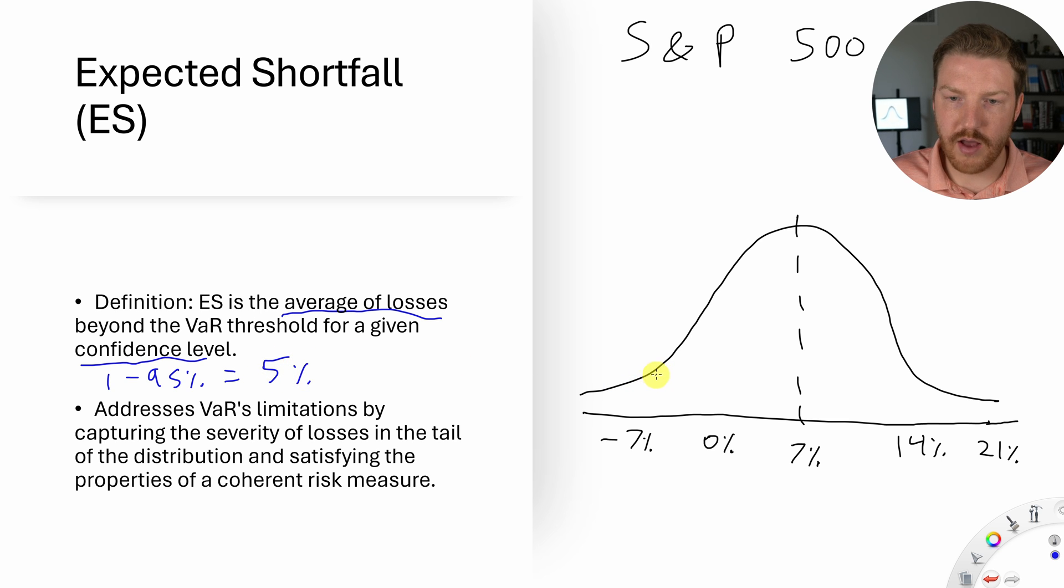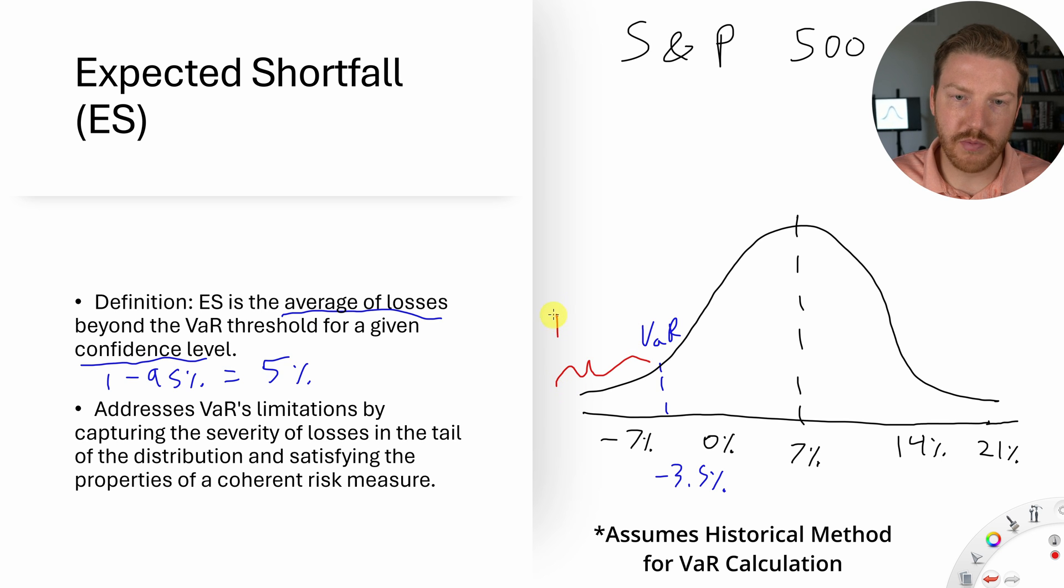And again, we're going to look at that 95th percentile confidence level, which puts us out into the 5th percentile tail. And if we just drew that right here, let's stick with the same numbers as last time. Here's our VaR, which is basically negative 3.5%. Then the expected shortfall would actually be the average of everything here. So if we took an average of all these observations, that would be our expected shortfall. I'm going to make up a number and let's just say the expected shortfall is equal to like negative 8%.